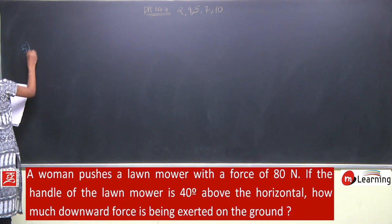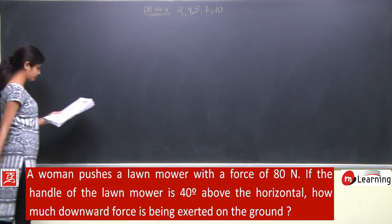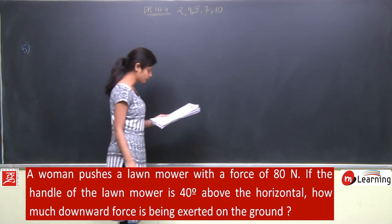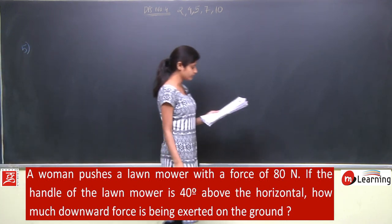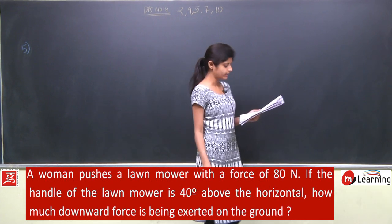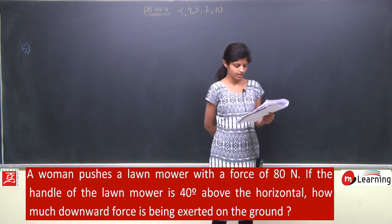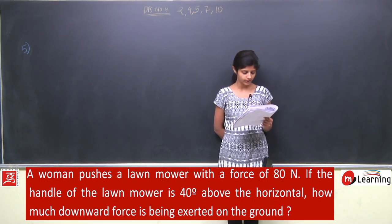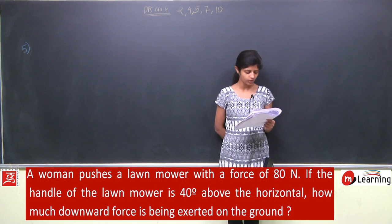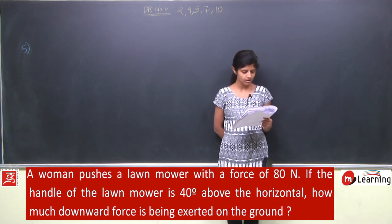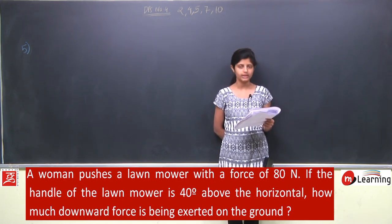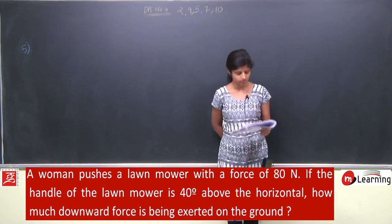Next is question number 5. A woman pushes a lawnmower with a force of 80 newton. If the handle of the lawnmower is 40 degrees above the horizontal, then how much downward force is being exerted on the ground?